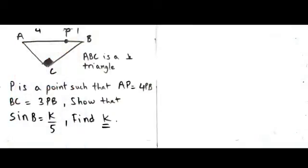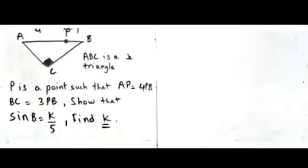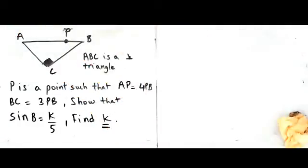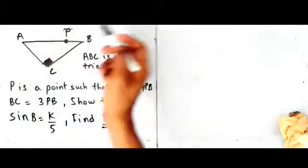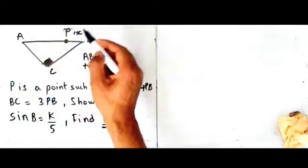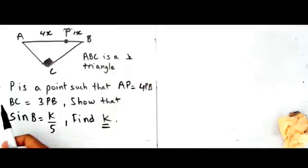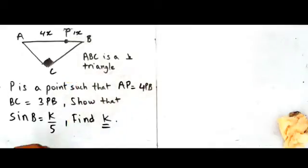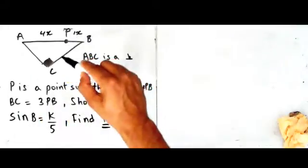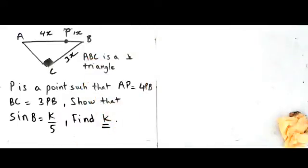So I've got a total of 5 parts. The next thing I also need to know is that BC is 3 times PB. So instead of writing 4 and 1, what we could do is say that PB is just 1x, so AP must be 4x. And BC is 3 times PB — PB is 1x, so BC must be 3x because it's 3 times as big.